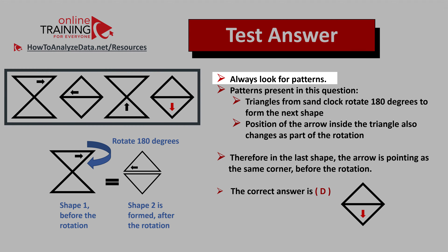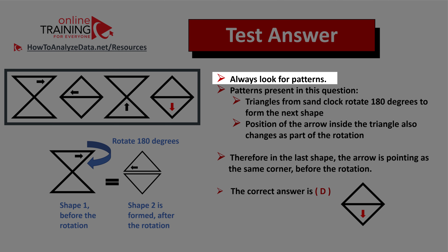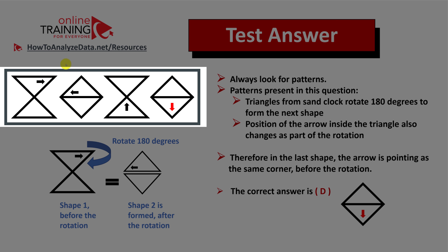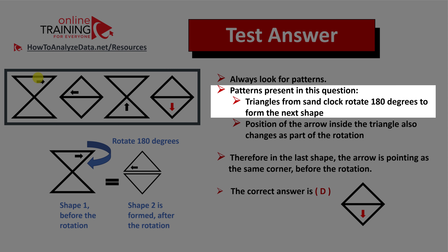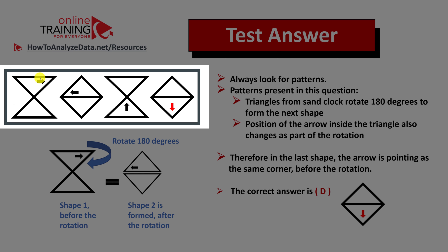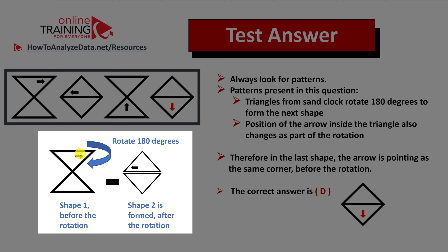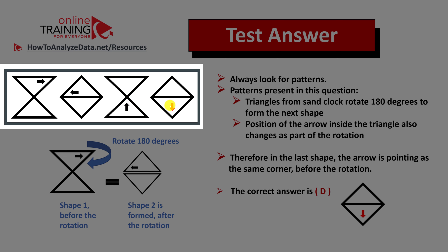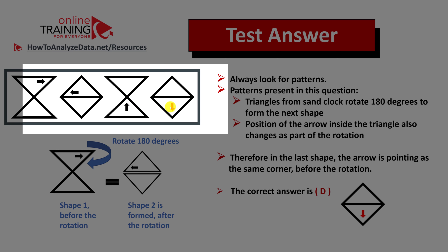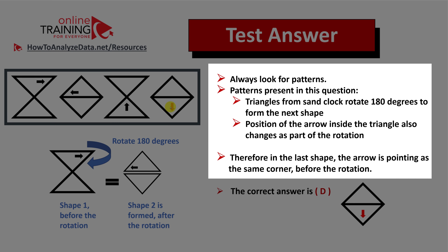The pattern here is triangle rotation. If we rotate triangles from the hourglass shape 180 degrees, we get to the square, and that's exactly what's happening between shape number one and shape number two. Once you figure out the pattern, you know exactly how to calculate the location of the arrow in shape number four.